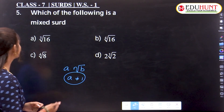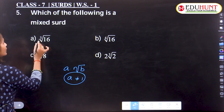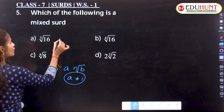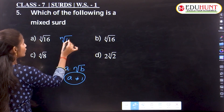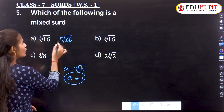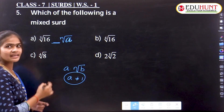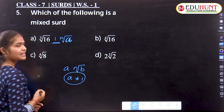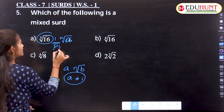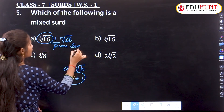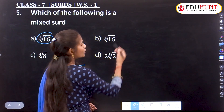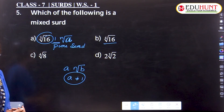Let us see the given options. First, cube root of 16 — this is in the form ⁿ√a. Here, no rational part is present, so we consider it as 1. Therefore, we will call cube root of 16 a pure surd.